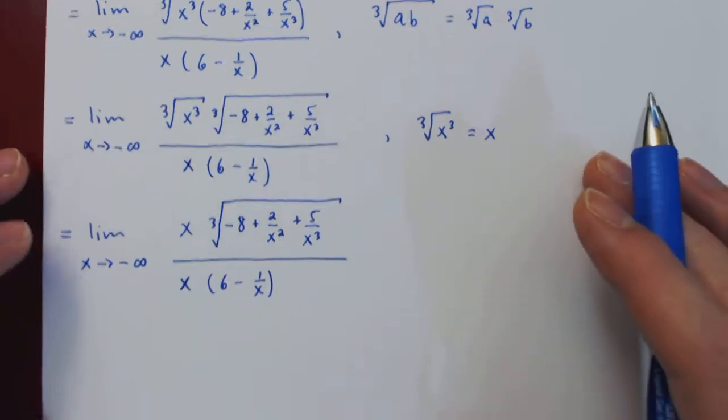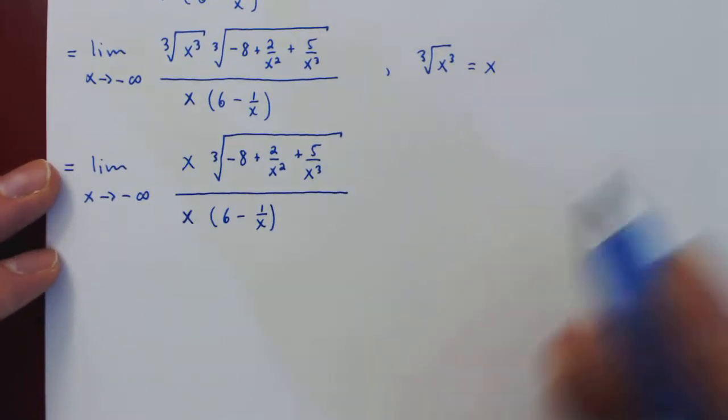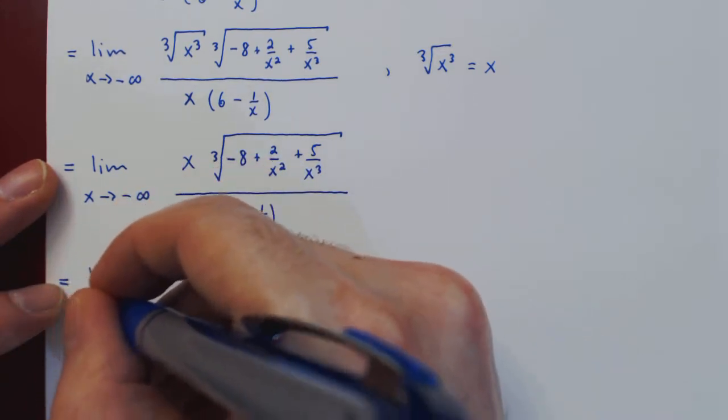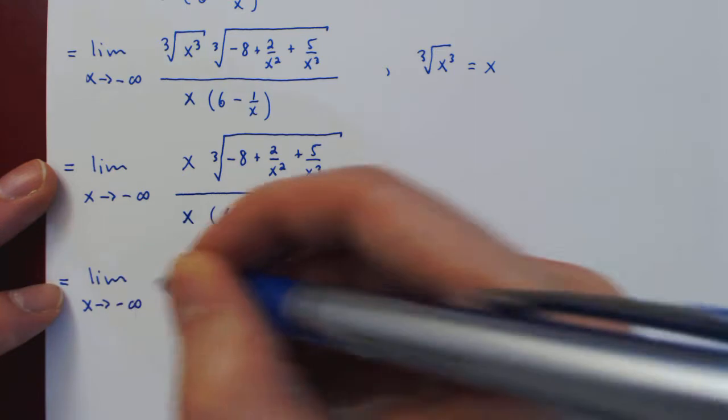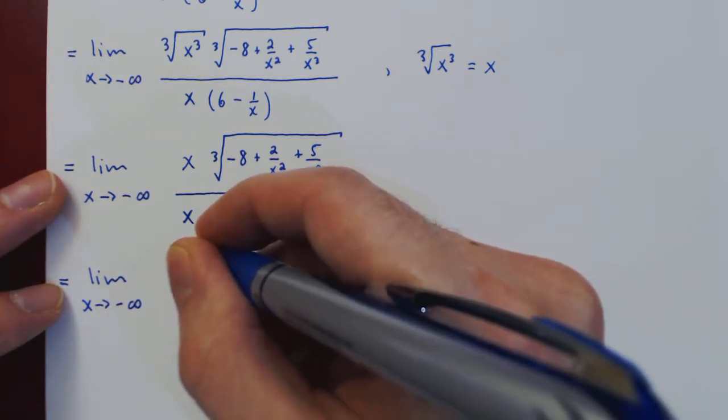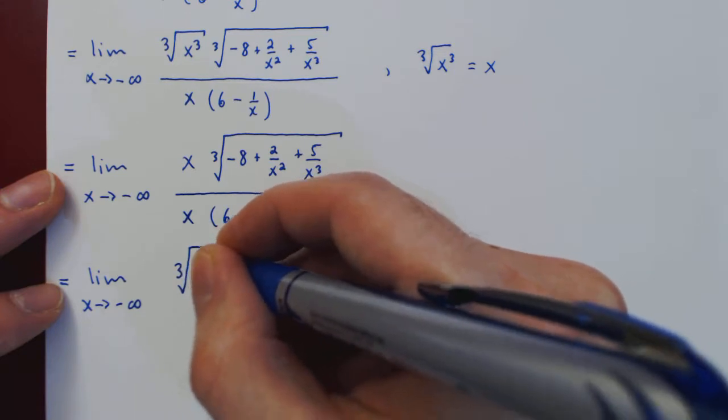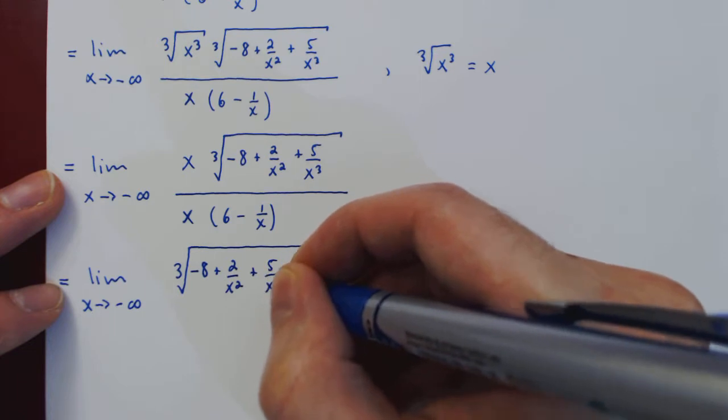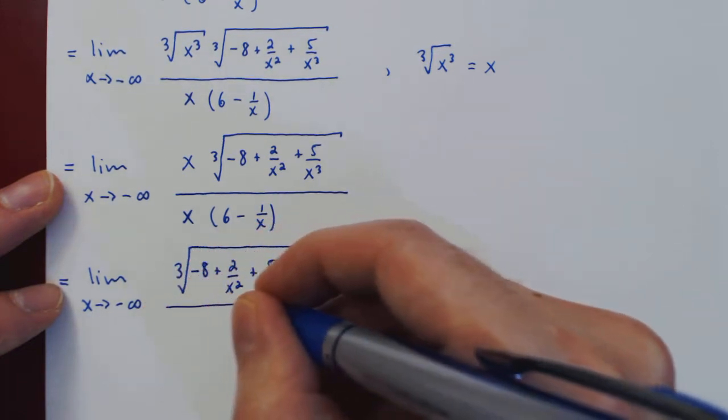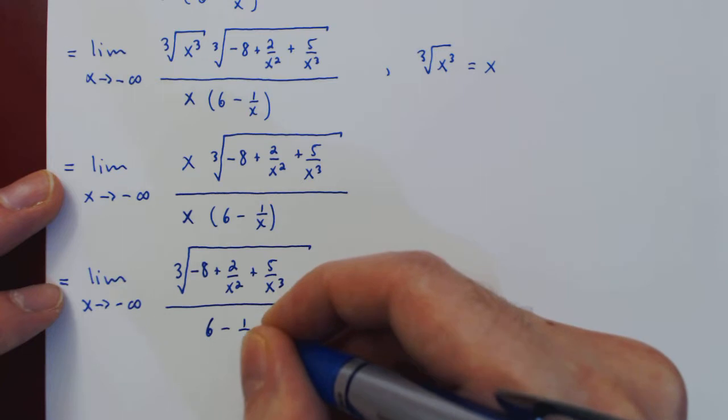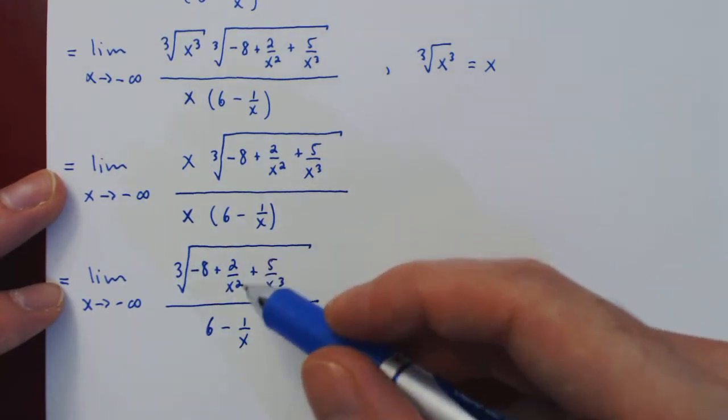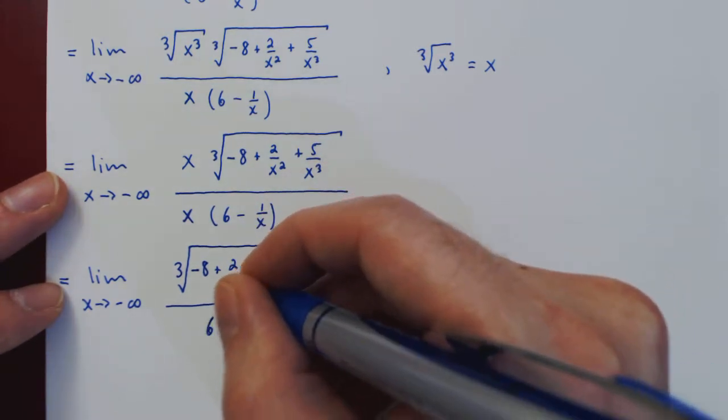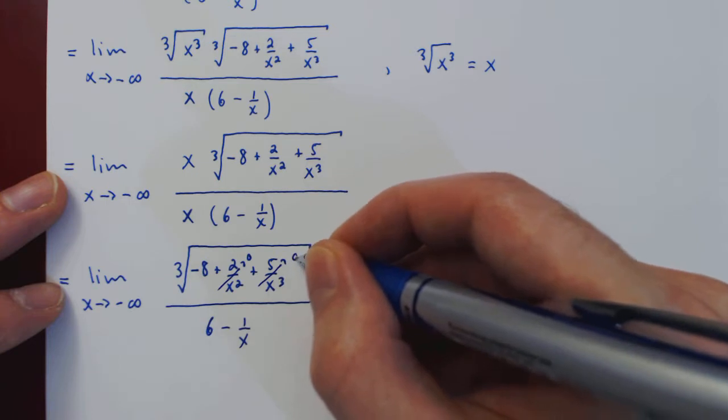We can now cancel the x over x, and as we're about to see, we will have an answer. So we have three fractions: 2 over x squared, 5 over x cubed, 1 over x. And as x goes to negative infinity, every single fraction is approaching 0.